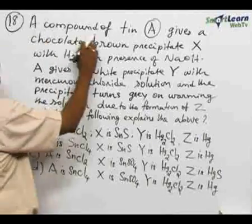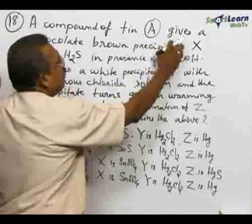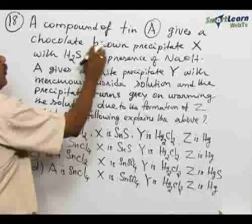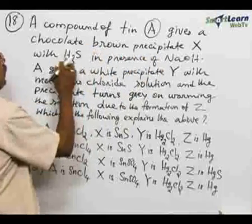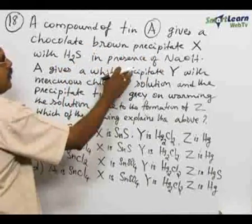Number 18, a compound of tin that is A gives a chocolate brown precipitate X with hydrogen sulphide in presence of sodium hydroxide.